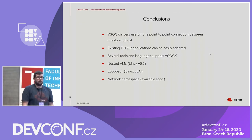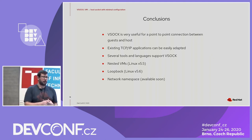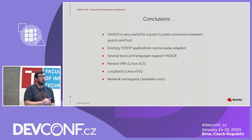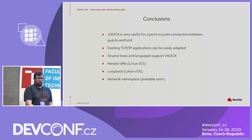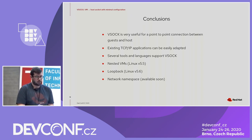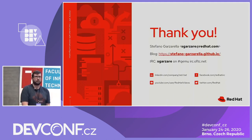In conclusion, VSOCK is very useful when you need a point-to-point connection between host and guest. Existing TCP/IP applications can be easily adapted by just changing the address family of the socket — the peer addressing. More and more tools and languages are supporting VSOCK. Regarding new features: nested VMs are supported in Linux 5.5, loopback in Linux 5.6, and hopefully network namespace support will be available soon. Thank you — any questions?